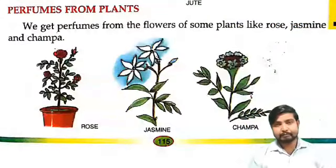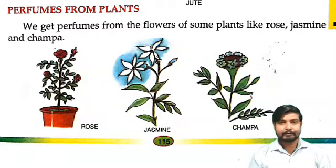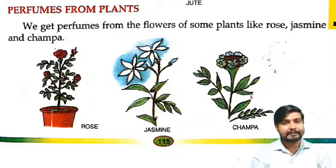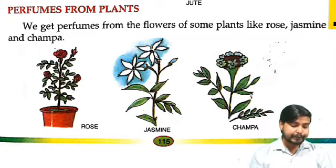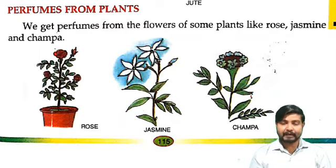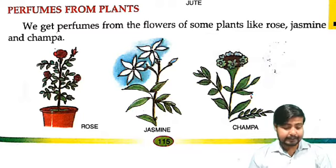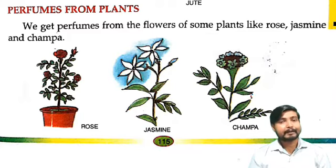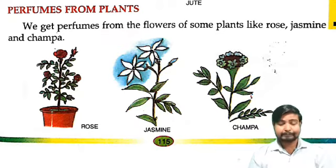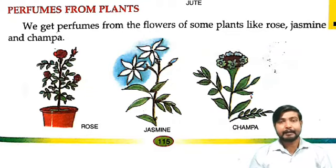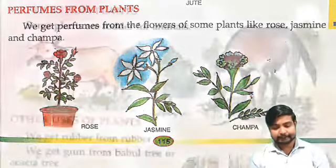Then perfumes from plants. Hum perfume lagate hain apne body mein. Yeh perfume bhi plants se hi banaya jaata hai. We get perfumes from the flowers of some plants like rose, jasmine, champa. In flowers se hum perfume banaate hain.